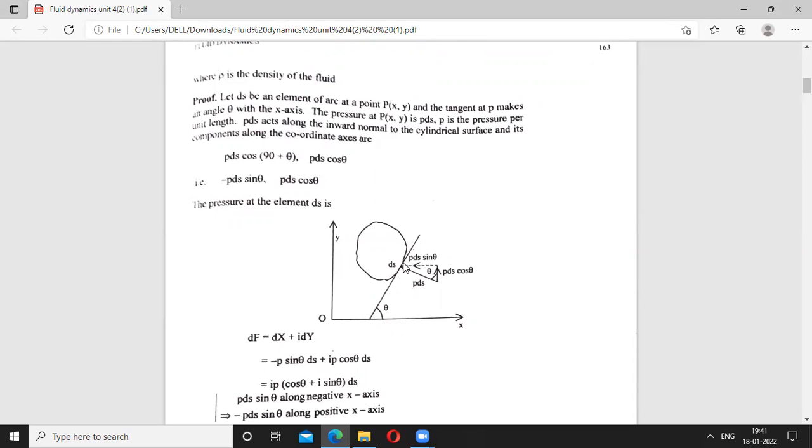Where P is the pressure, but PDS is the element because P is the pressure per unit length. So PDS is acting along the inward normal to the slender cylindrical surface and its component along the coordinate axis.